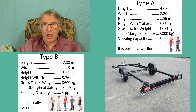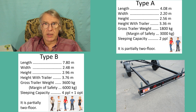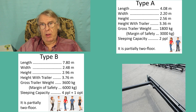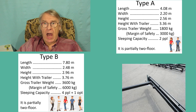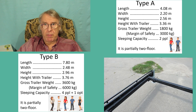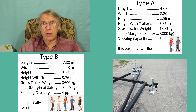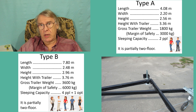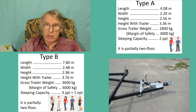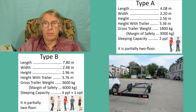The first item: we will make only two types of motorhomes. The first and second motorhome types are partially to flow. For both types, the overall dimensions, gross trailer weight and margin of safety weight, and sleeping capacity for people can be seen in the pictures.